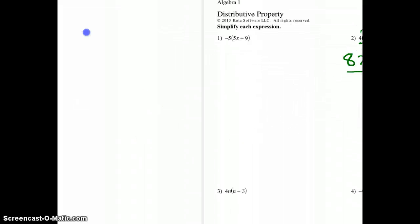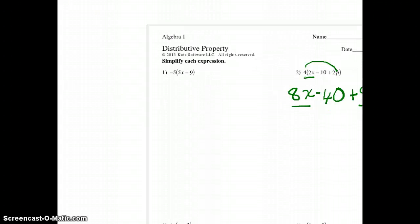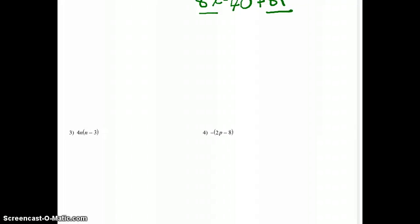Second problem, third problem we have here. Here it looks like we have a variable times a variable. So what am I going to do with this? This is 4n times n, and 4n times negative 3. We just learned that, so what has really changed? Let's write it. We have 4n is really 4 times n, right? 4 times n, 4n, and then we're multiplying that times n.